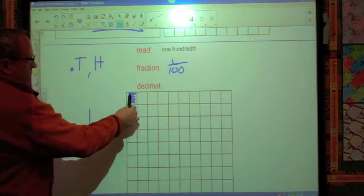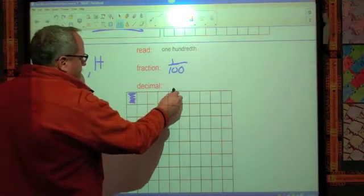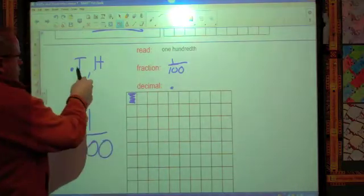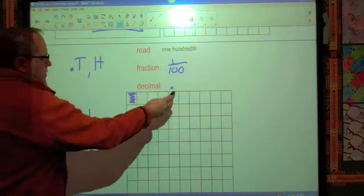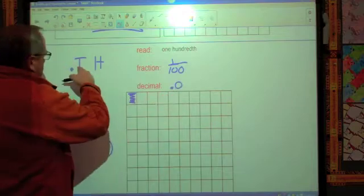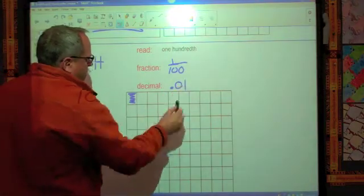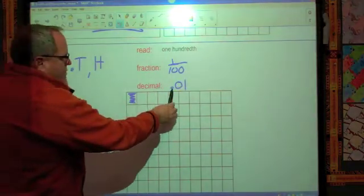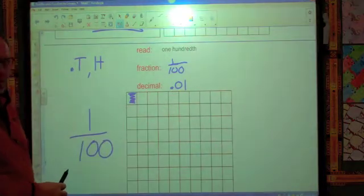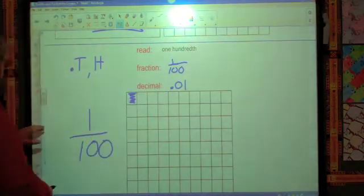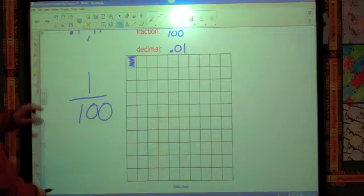But we've colored that in. We've only got one out of 100. So in this case, the decimal is going to be written like this. Do we have any tenths? Do we have a whole column yet? No. So that's going to be a zero. But we do have one hundredths, so we're going to write it as a one. So the decimal here is written as 0.01. 0.01. So that's how you can see it on that one.